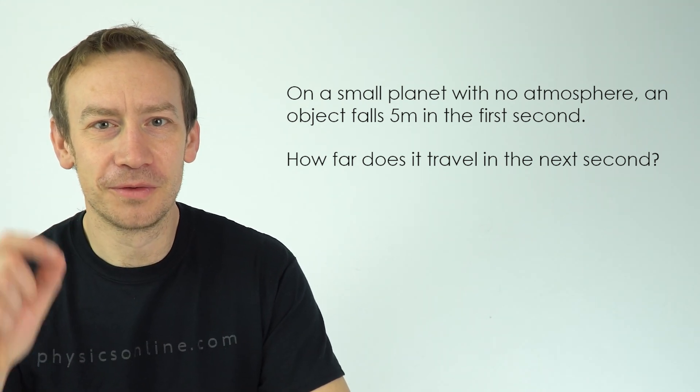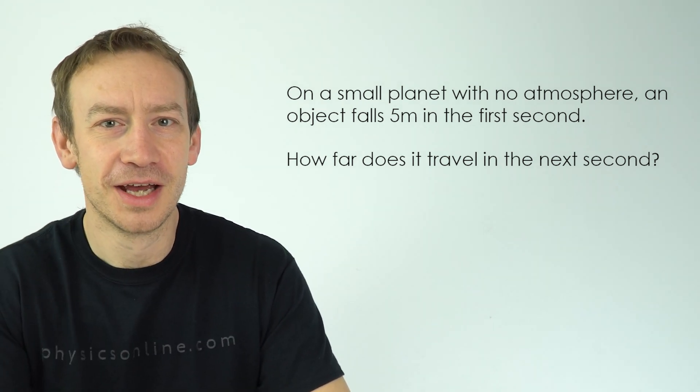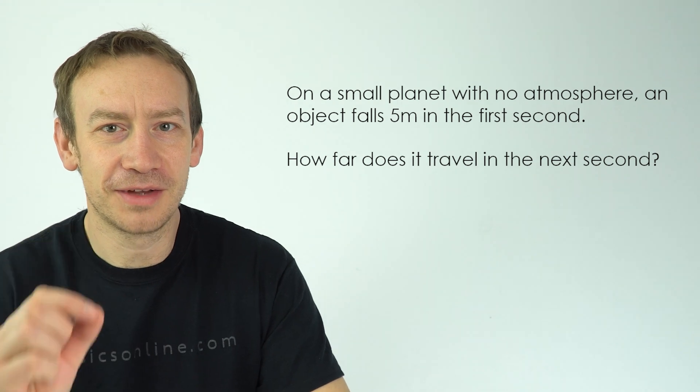So it basically said on a small planet with no atmosphere, a small object falls five meters in the first second. How far does it travel in the second second?